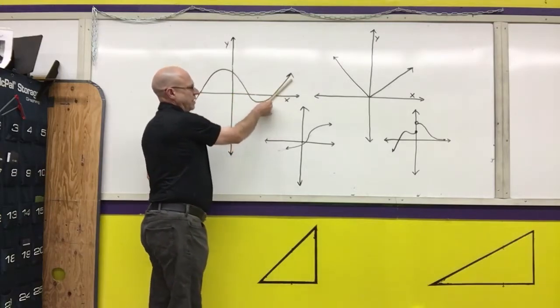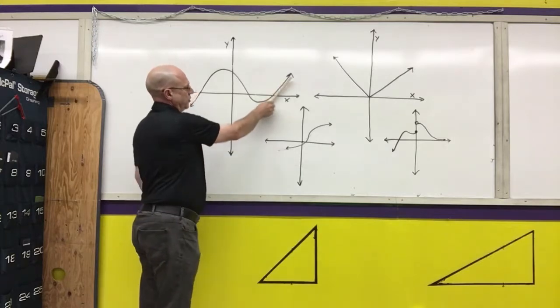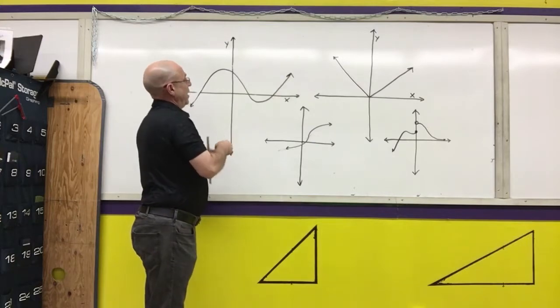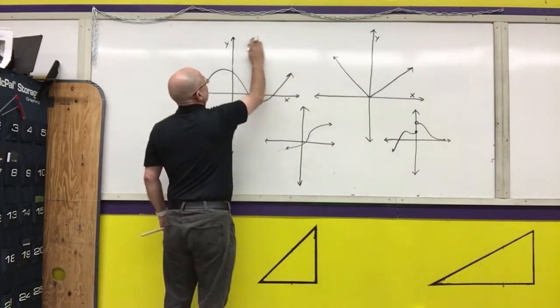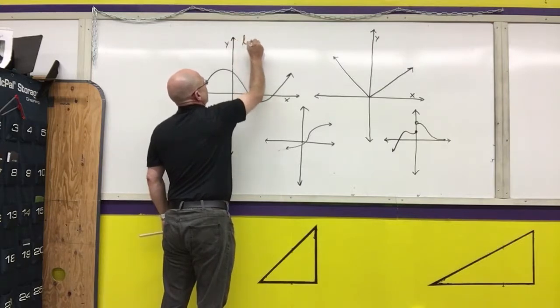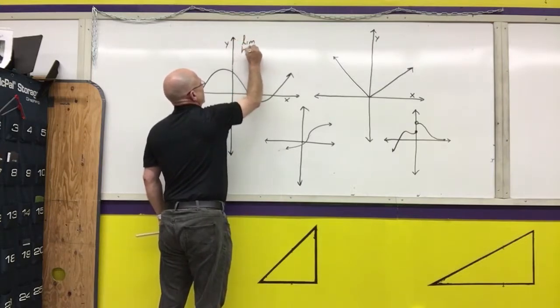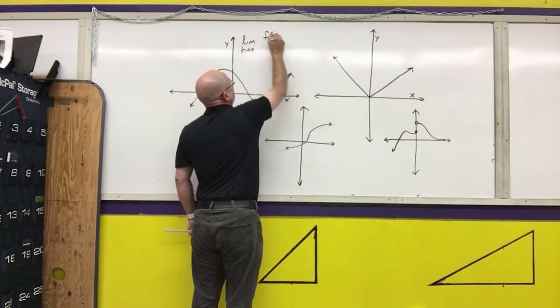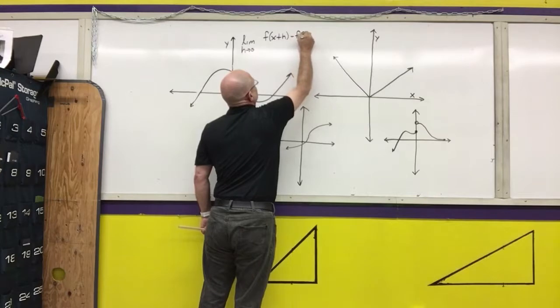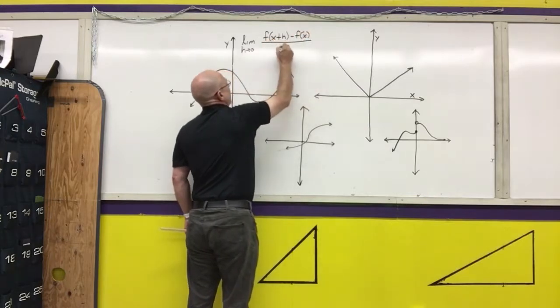And we're going to use the definition of the derivative to actually calculate the slope of that line. We've already done that. If you remember, we took the limit as h approached zero of f(x+h) minus f(x) all over h.